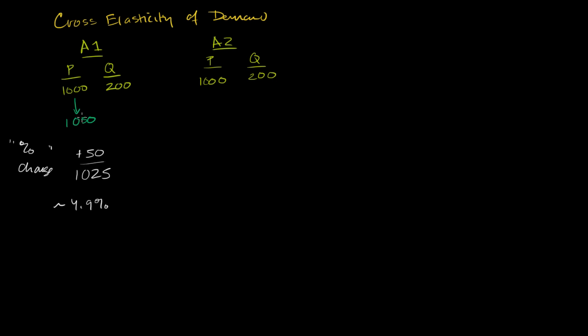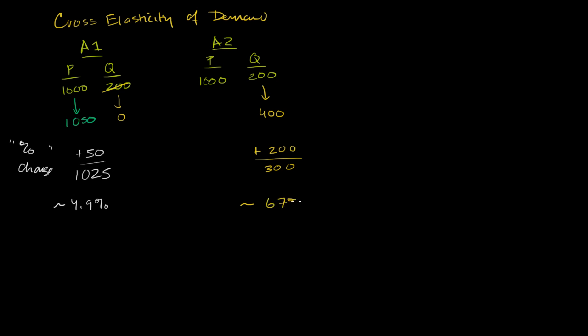When airline one raises its price, everyone using travel comparison sites is going to gravitate to airline two — even just to save $50. So airline one's quantity demanded goes to 0, and airline two's goes to 400. The change in quantity for airline two is 200 (from 200 to 400). Using the midpoint as our base — the average of 200 and 400, which is 300 — we get 200 divided by 300, which is approximately 67%.